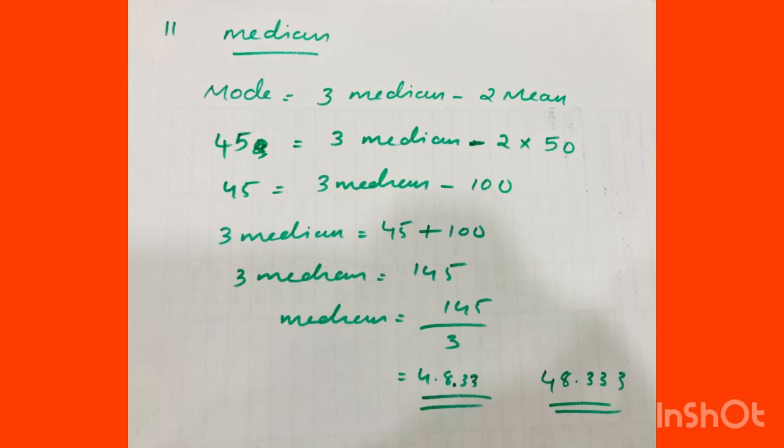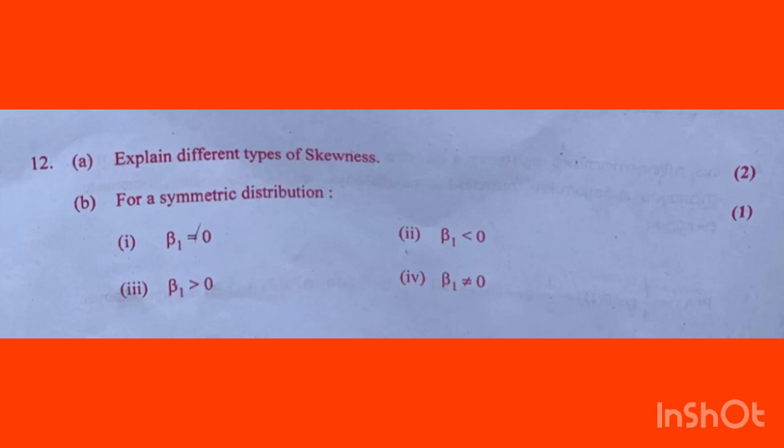Verification: 3 × 48.333 − 2 × 50 = 45. So 48.333 is the median value.